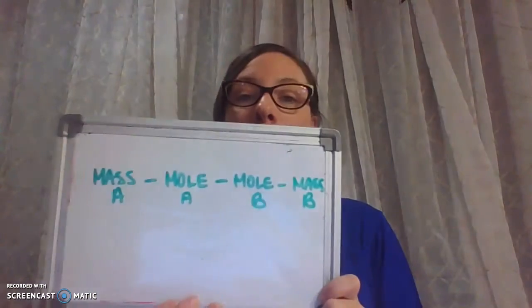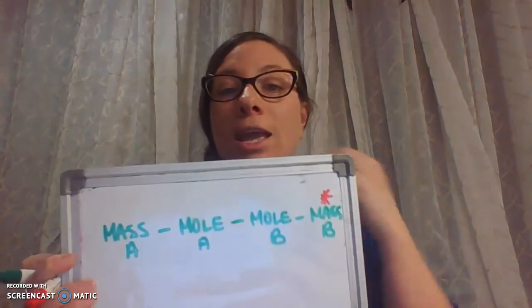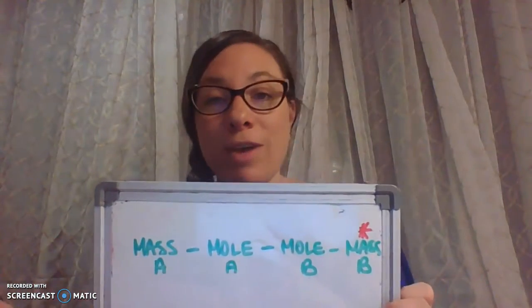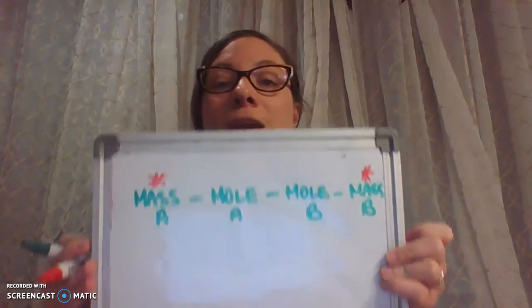I just want to remind you guys of the roadmap that we've been working with in this unit: mass of substance A to moles of substance A to moles of substance B to mass of substance B. That's also in your notes — we've talked about it quite a few times. What we need to do first is decide where we're starting on the roadmap and where we're ending. The problem asks for mass of iodine produced, so we're ending at mass of substance B — all the way to the end. And given to us are two mass values, so we're starting at mass of substance A.